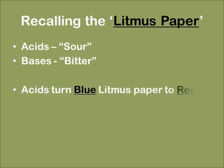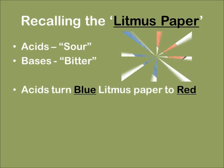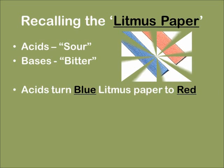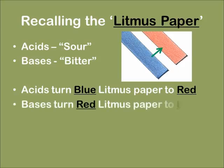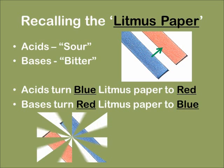We also know that acids turn the blue litmus paper to red, as shown above. And bases turn the red litmus paper to blue, as shown below.